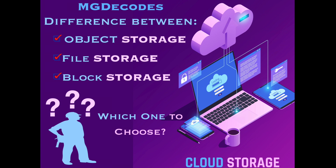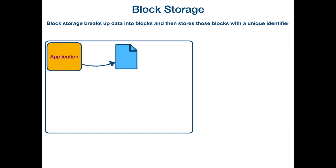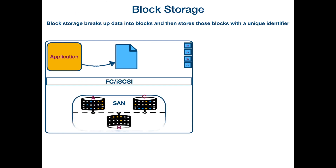Let's start first with block storage. Block storage breaks up data into blocks and then stores those blocks with a unique identifier. Here I have an application which is trying to save a file. For saving this file, first this file will be broken into equal size chunks called blocks. These blocks will further travel through an interface like FC or iSCSI, and there they will get a unique identifier which will specify on where or which location these blocks have to save themselves.